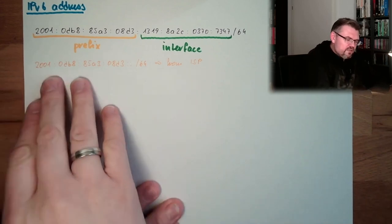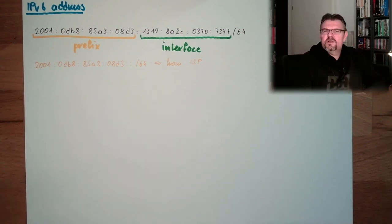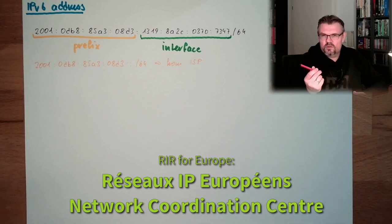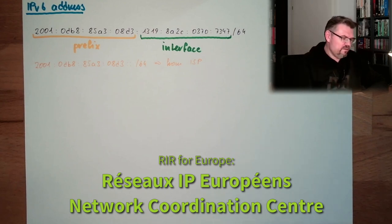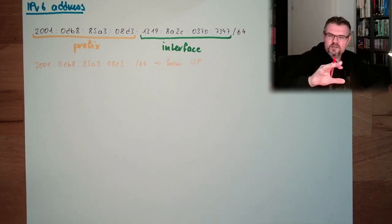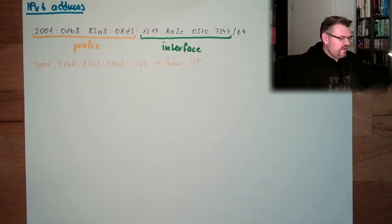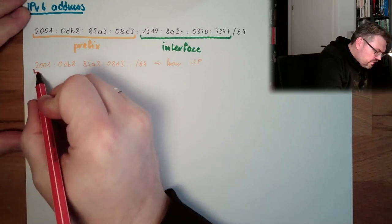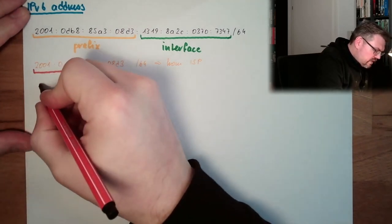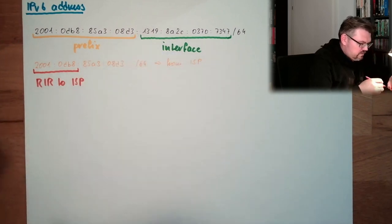How does the Internet Service Provider know which parts it may use? There is the Regional Internet Registry — we talked about this, there are five in the world. There is a video on IP version 4 where I talked about this. Here in Europe, in America, in Asia — there are five worldwide. They tell the Internet Service Provider which address range it can use, and this is usually the first 32 bits. This assignment comes from the RIR to the ISP.